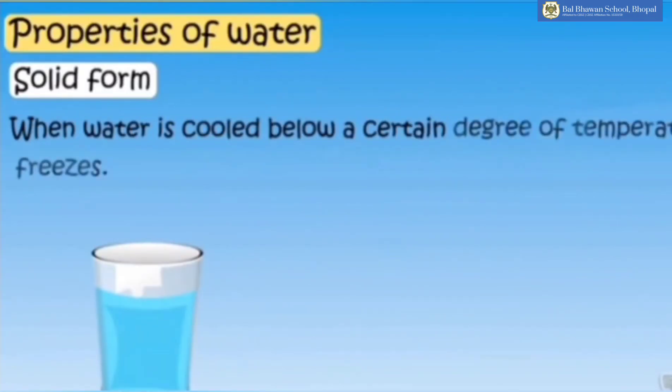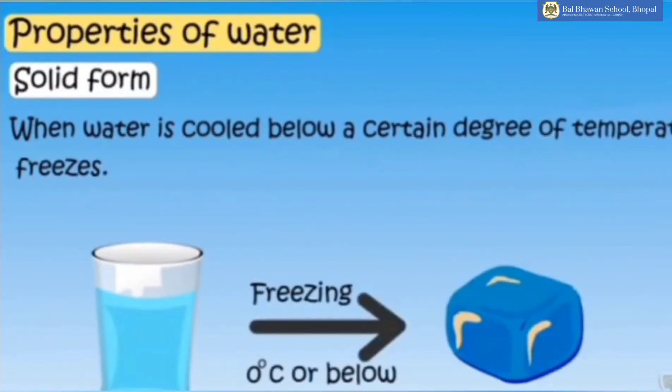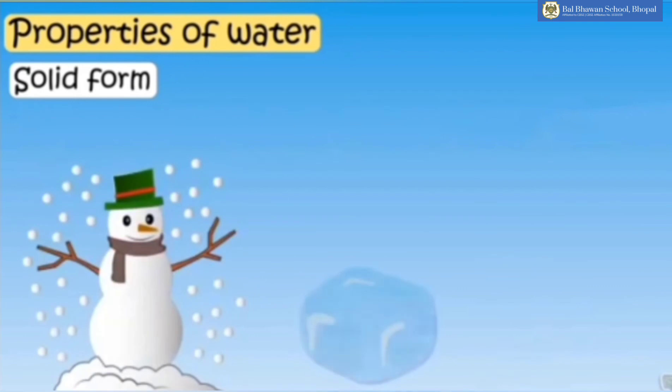Solid form of water. When water is cooled below a certain degree of temperature, that is, it freezes, it becomes or turns into a solid. Some examples are snow, ice and snowflakes.